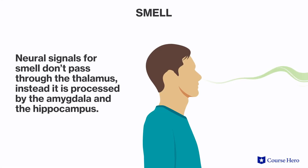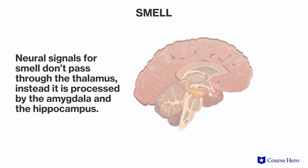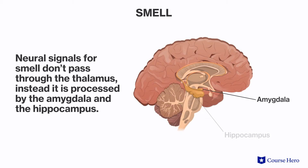The only stimulus that this doesn't apply to is smell. Neural signals for smell don't pass through the thalamus. Instead, they pass through the amygdala, which is associated with emotion, and the hippocampus, which is associated with memory.